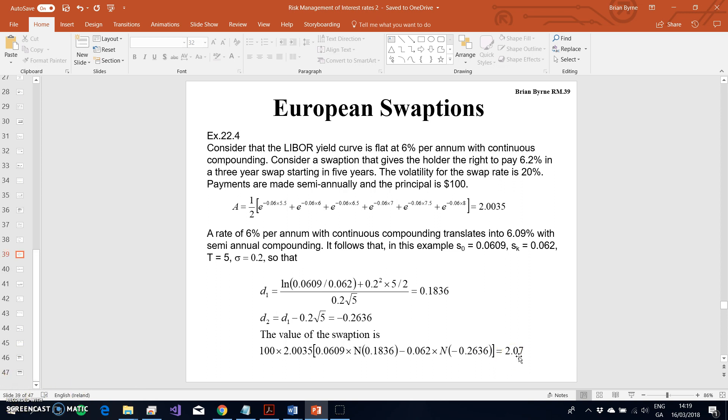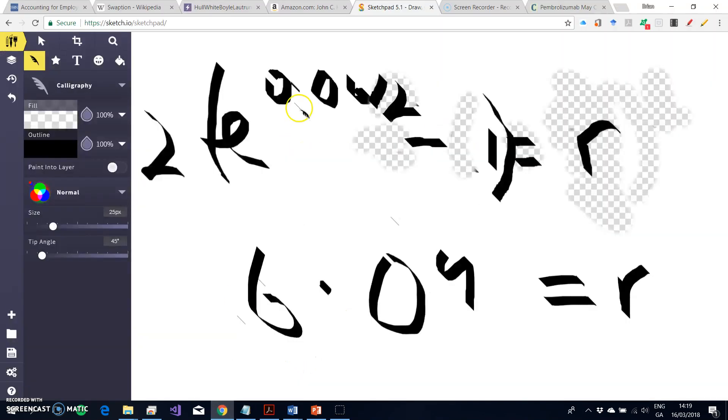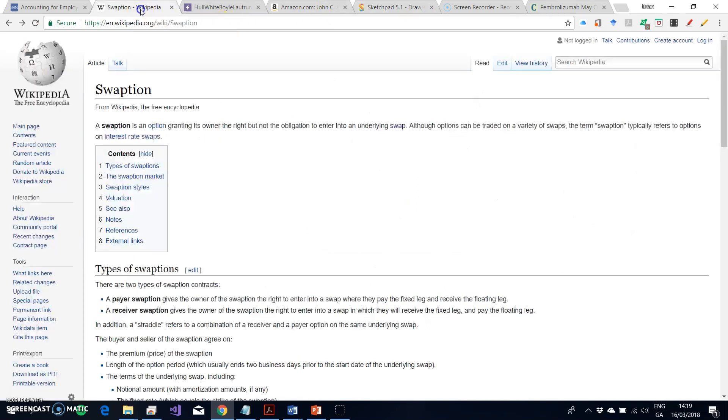For the swaption value, the way we read this option value is: we have a payer swaption. The payer swaption, if we look at the previous definition, gives the owner